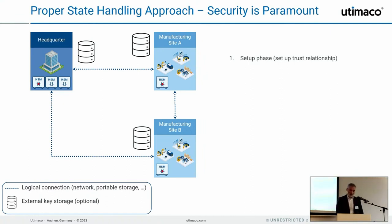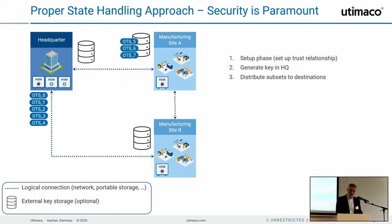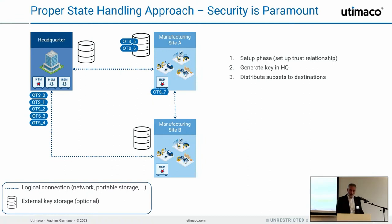Here's how the mechanism works with, say, three sites — headquarters, manufacturing site A and B. We first establish trust relationships by installing secret keys in all HSMs. Then we generate OTS key packages at a central HSM and transfer them to all different HSMs or optional external key storages. The advantage of external key storage is unlimited memory, unlimited accessibility, and no blocking of HSM operations. When operating with these keys during manufacturing, if one site risks exhausting keys, you can simply transfer keys from one site to another — up to the maximum amount.